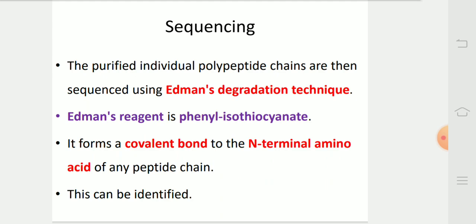Then, the third part of the protein analysis is sequencing. The purified individual protein chains are sequenced using Edman degradation technique. Edman's reagent is phenyl isothiocyanate. It forms a covalent bond to the N-terminal amino acid of any peptide chain. This can be identified.